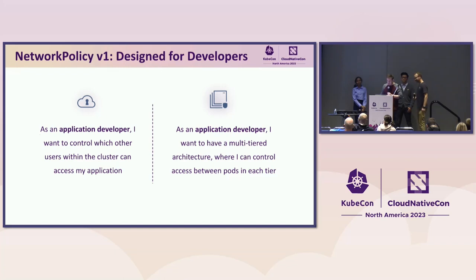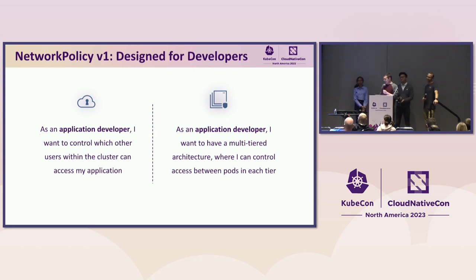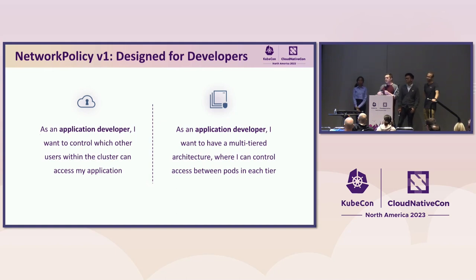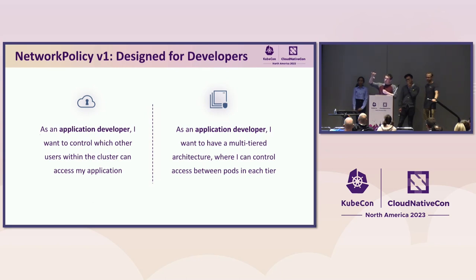A long time ago, we created Network Policy version 1. The idea was that developers using Kubernetes had ideas about who they did and didn't want talking to their pods. As an application developer, I want to control which other users within the cluster can access my application — so you might have two different groups of users and you don't want people in the other group connecting to your service. Another use case: a multi-tiered architecture where you have your front-end, back-end, and database namespaces. The front-end can talk to the back-end and the back-end can talk to the database, but the front-end can't talk to the database. And if a hacker breaks into the cluster, it's limited what they can do because of the policies you created.